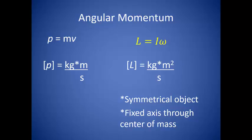Now we want to look at these units just a little bit, because they are different from those found when we determine linear momentum. Linear momentum units are kilograms times meters divided by time. Remember that I, the moment of inertia, is found by taking the mass times the radius squared, which gives us the first part of the term as kilograms times meters squared. Angular velocity is labeled as radians per second, so our units for angular momentum turn out to be kilograms times meters squared divided by time.